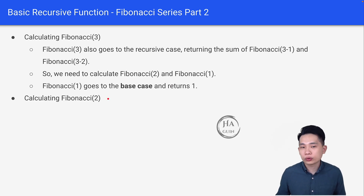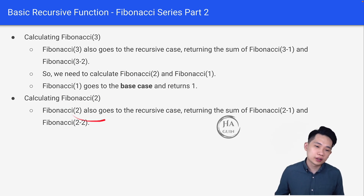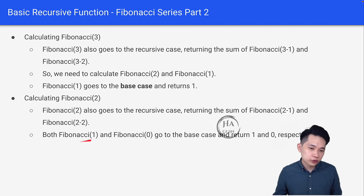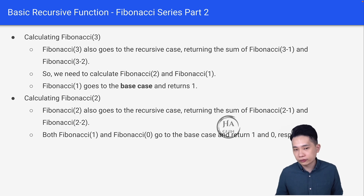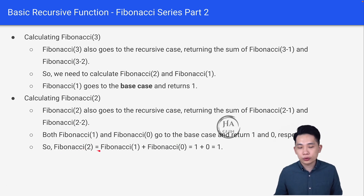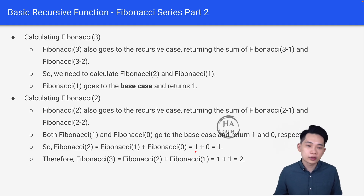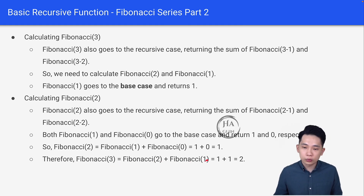Next, we calculate Fibonacci(2). It also goes to the recursive case, returning the sum of Fibonacci(2 minus 1) and Fibonacci(2 minus 2). Both Fibonacci(1) and Fibonacci(0) go to the base case and return 1 and 0 respectively. Therefore, Fibonacci(2) equals Fibonacci(1) plus Fibonacci(0), which is 1 plus 0, equal to 1. Now let's do Fibonacci(3): Fibonacci(3) equals Fibonacci(2) plus Fibonacci(1), which is 1 plus 1, equal to 2.